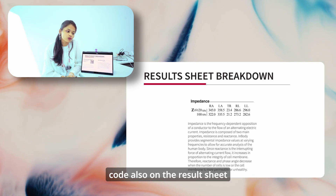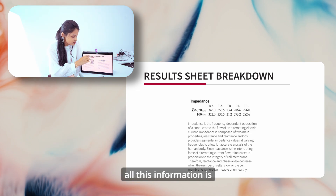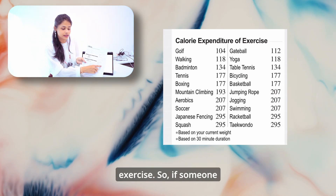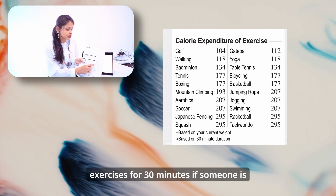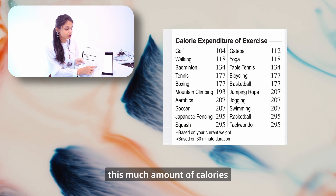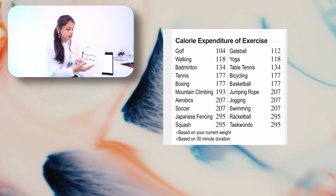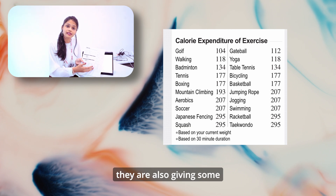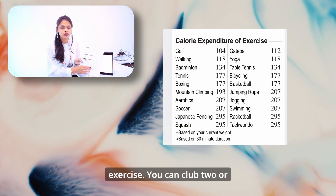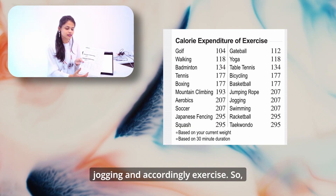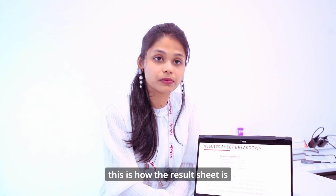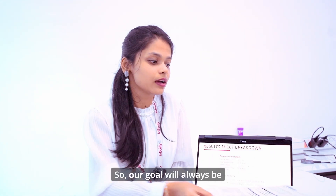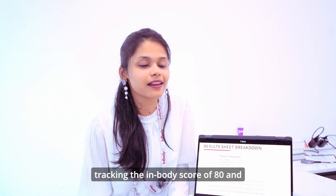There is also a QR code on the result sheet which can be customized, and all this information is available via the QR code. There is a parameter for calorie expenditure of exercise: if someone exercises for 30 minutes — walking or playing badminton — this much amount of calories are burned. This is individualized for each client. You can combine two or three activities like walking and jogging for exercise guidance. This is how the result sheet is interpreted for InBody 270, and the amalgamation of the whole result sheet is the InBody score. Our goal will always be tracking the InBody score of 80 and having a good health status.